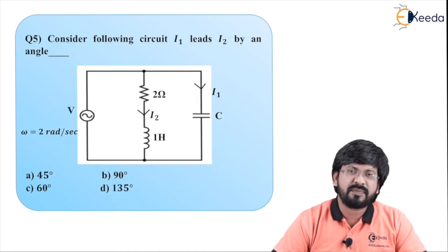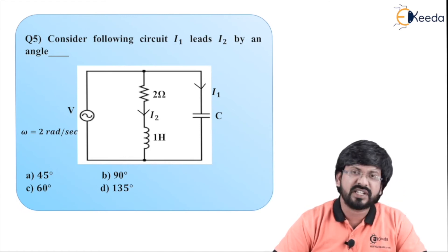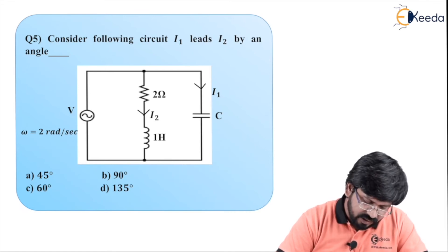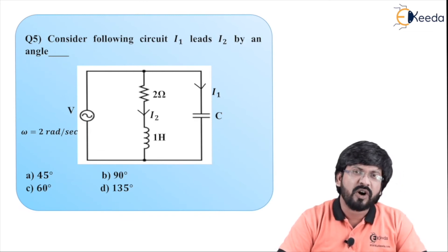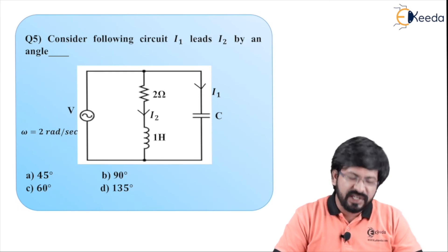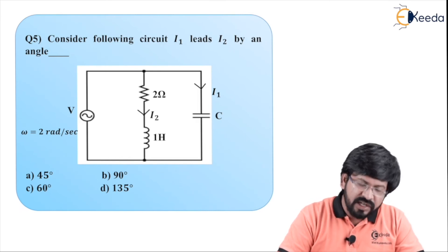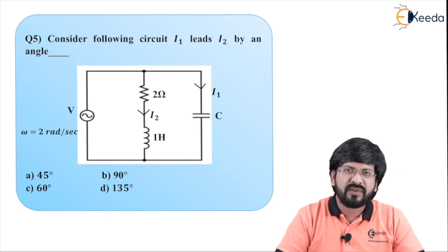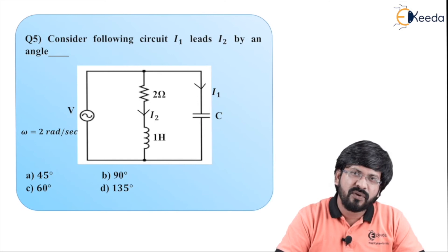Question number 5: Consider the following circuit — I1 leads I2 by what angle? Options are 45°, 90°, 60°, or 135°. The supply voltage frequency is 2 radians per second. The first branch is an RL circuit and the second branch is a capacitor C. Current through the first branch is I2, current through the second branch is I1. Whenever a question is about phase, always solve it by drawing a vector diagram for the given circuit.